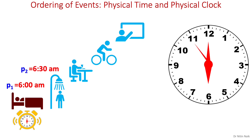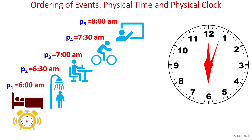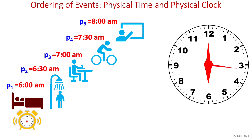Then I take a shower at 6:30, get ready and have breakfast at 7, take a bike ride to work at 7:30, and start teaching at 8. All my events are ordered based on the physical time of my physical clock. In this ordering, one event happens before another event. For example, I wake up before taking a shower. This happen-before relationship is determined by physical time using physical clocks as a mechanism to deliver this time.